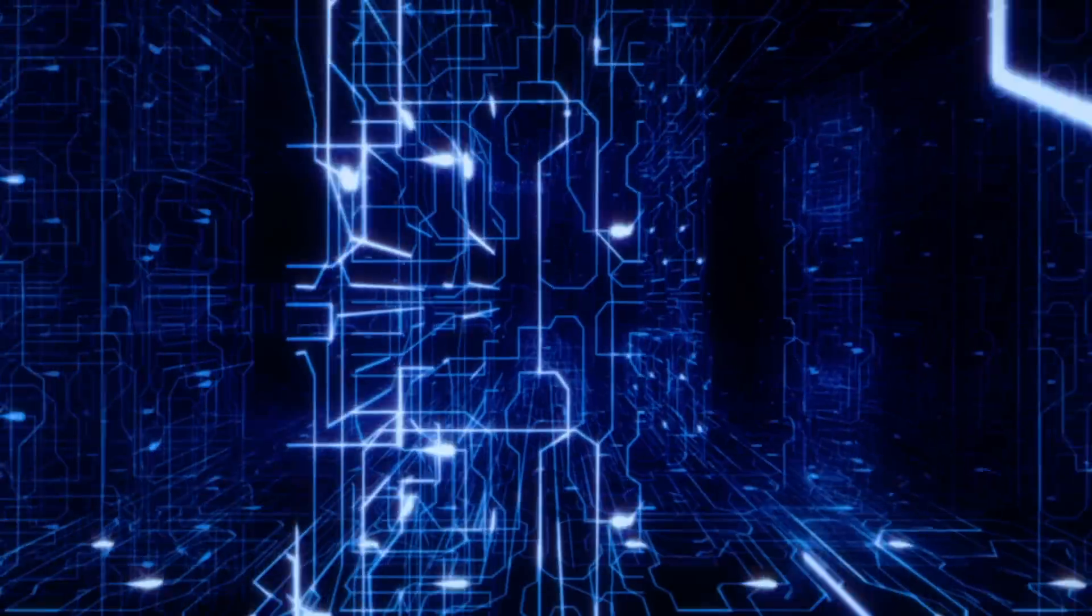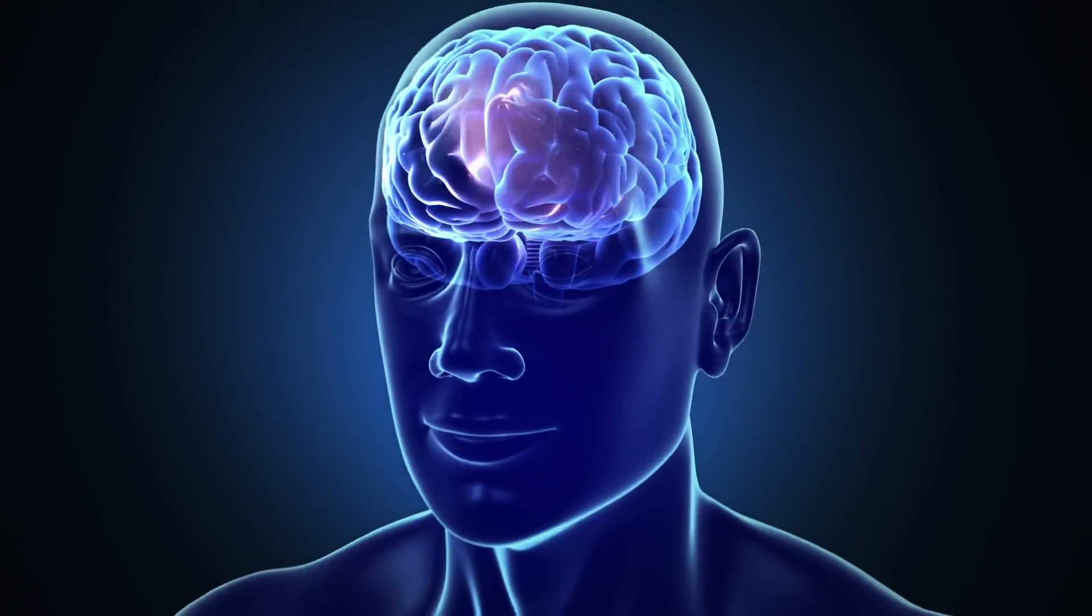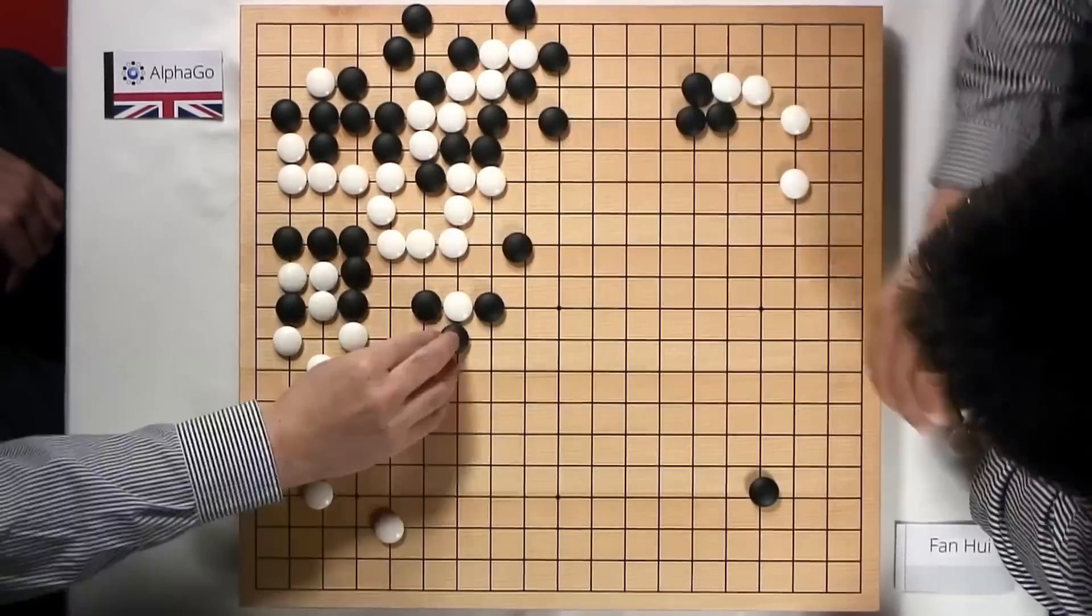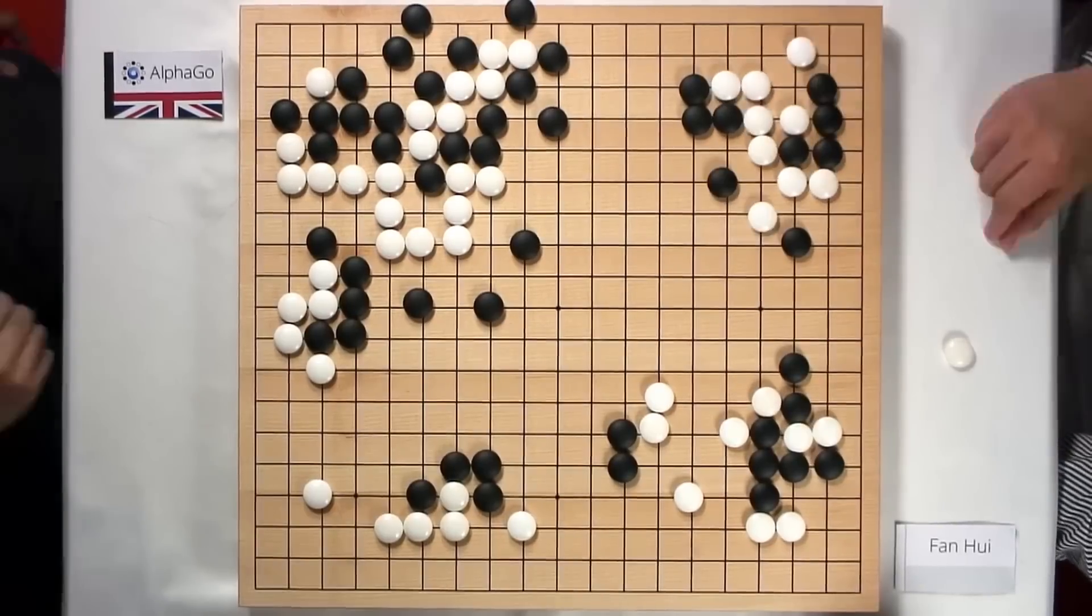AlphaGo's system uses deep neural networks which approximate the web of neurons in the human brain. Basically, if you feed it enough Go moves from the world's grandmasters, it can learn to play Go, and play it well.